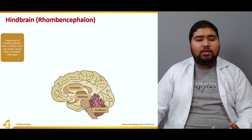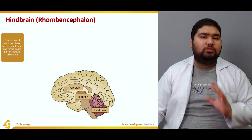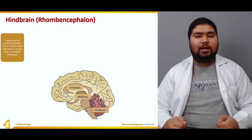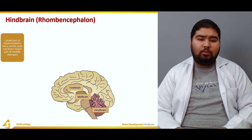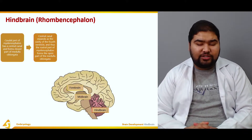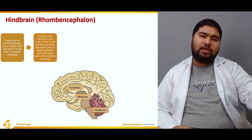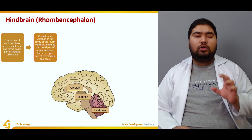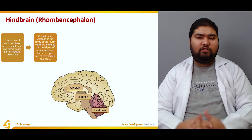The caudalmost part of the myelencephalon has a central canal and forms the closed part of the medulla oblongata. The myelencephalon is responsible for producing the medulla oblongata, which has two parts: a closed part and an open part. The central canal expands as the cavity of the fourth ventricle, and thus the rostral part of the myelencephalon forms the open part of the medulla oblongata.